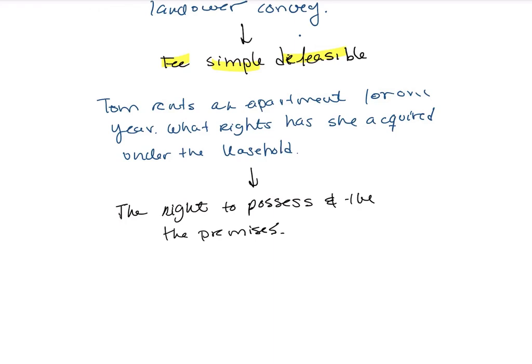Under a lease, a tenant acquires certain rights including the right to possess, use, and access the property for the duration of the lease term.